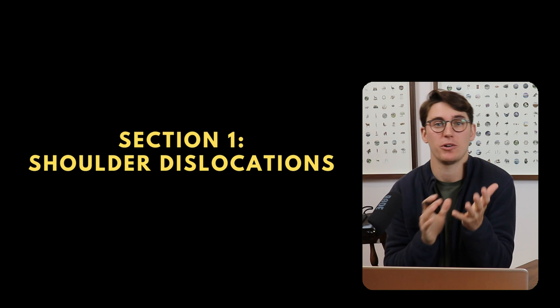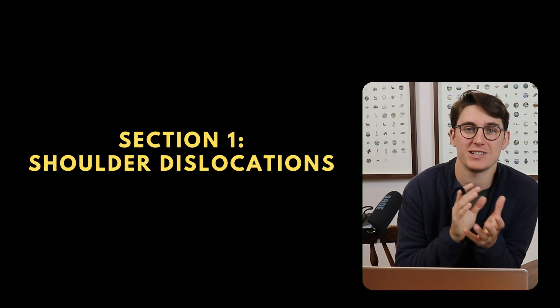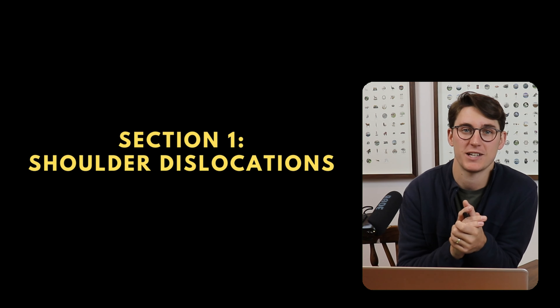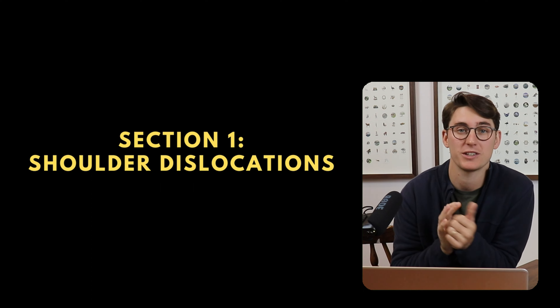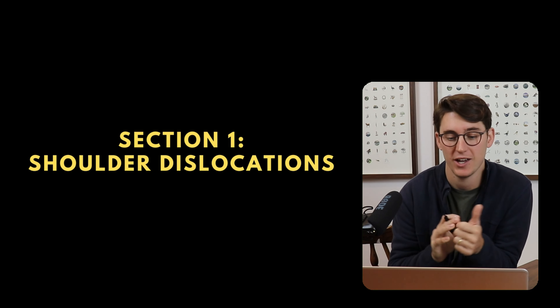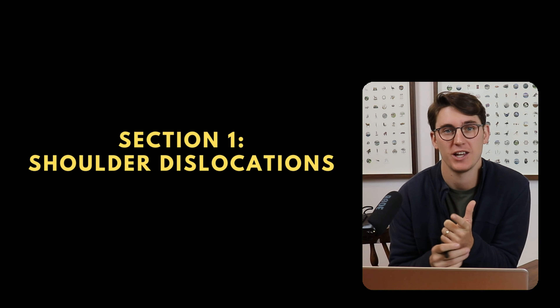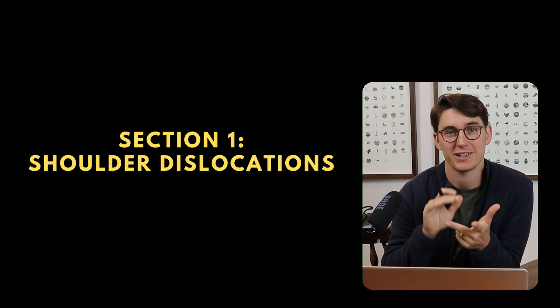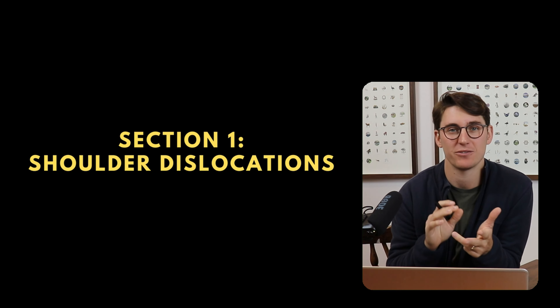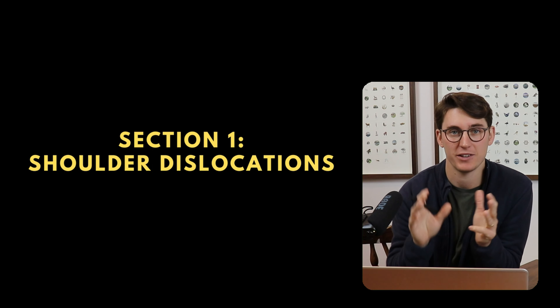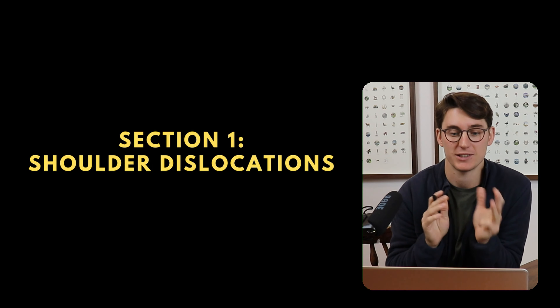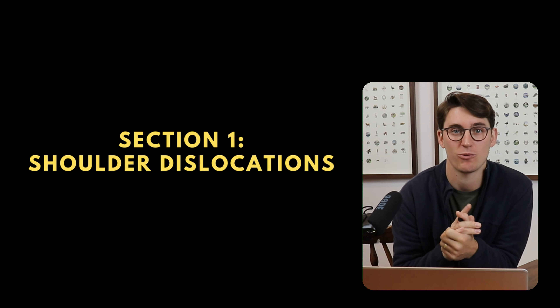Now we'll cover common pathologies in the trauma setting: dislocations, common fractures, the AC joint, and soft tissue findings around the shoulder joint.